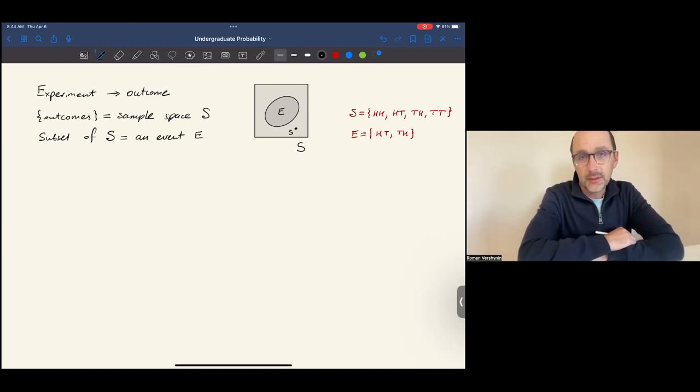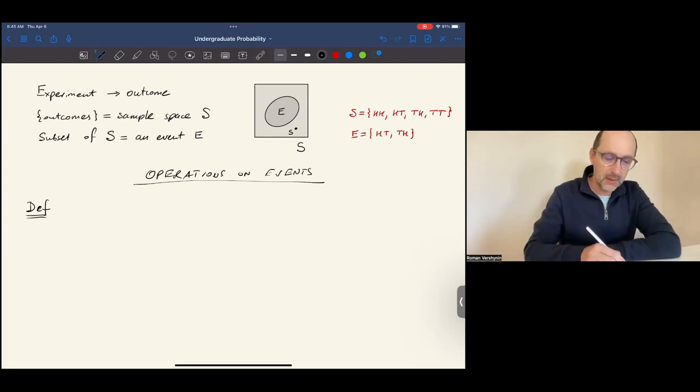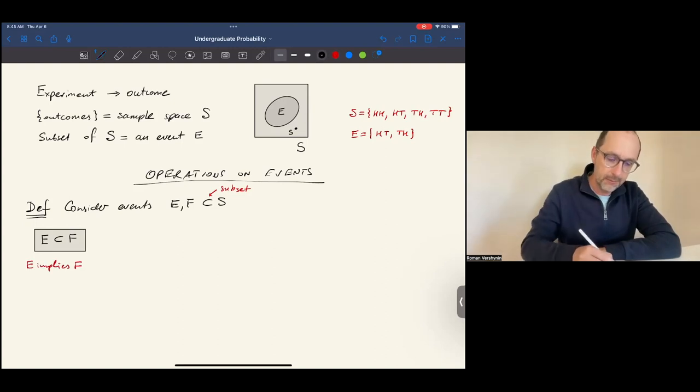And you also can go to the link provided to look into more about operations on sets. So here's our definition. Consider events E and F. And remember, there are subsets of S, which I denote by this sign. We say that E implies F if for any outcome in E, that outcome is also in F. This letter stands for any, and this means belongs to.